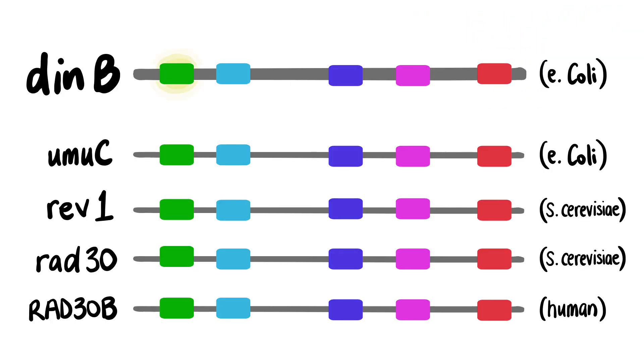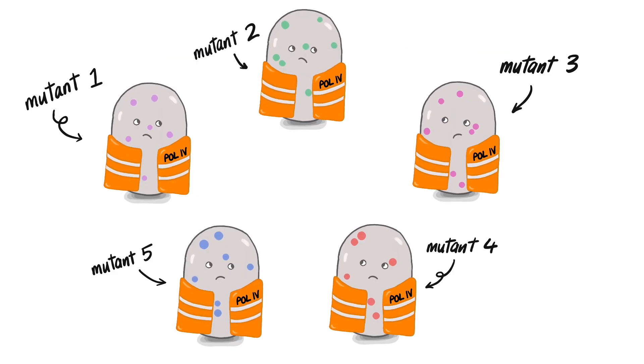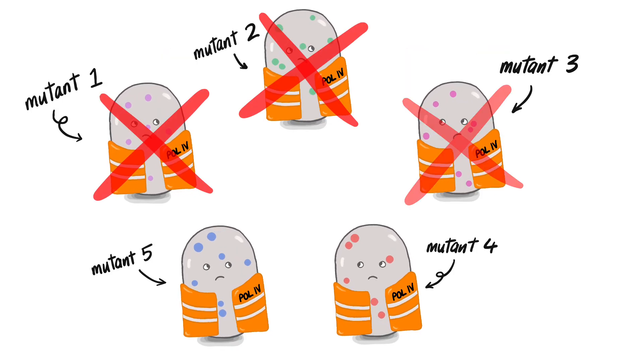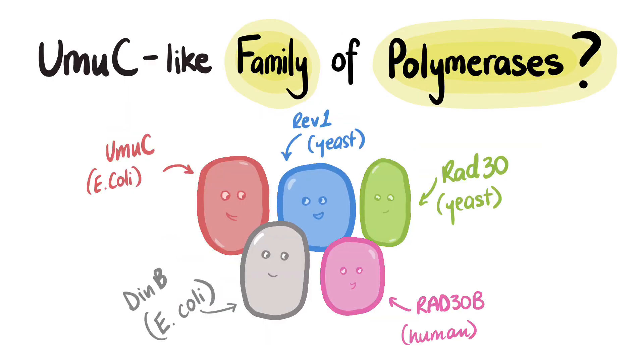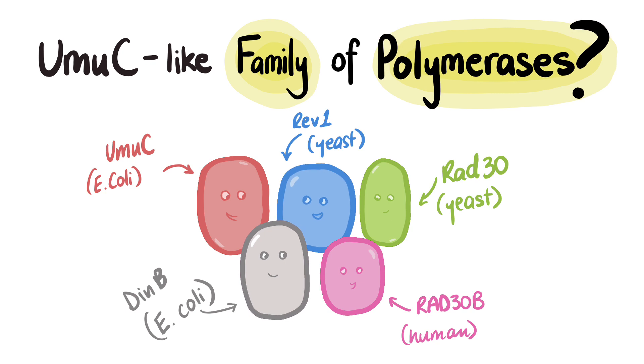Finally, the researchers conducted targeted mutagenesis on all five UMUC family regions of homology. DIN B mutants didn't show polymerase activity if any one of these regions were defective, suggesting the entire protein family could be polymerases.